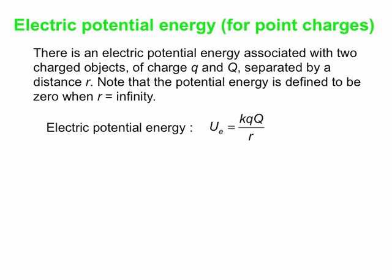The potential energy is defined to be zero when r is infinity. Putting r equals infinity into the equation gives zero, so you are not free to define a separate zero when using this energy equation. This makes sense: if the charges are infinitely far apart, they don't interact.